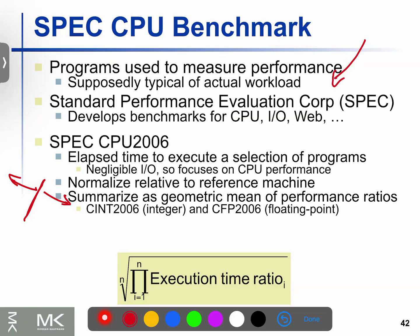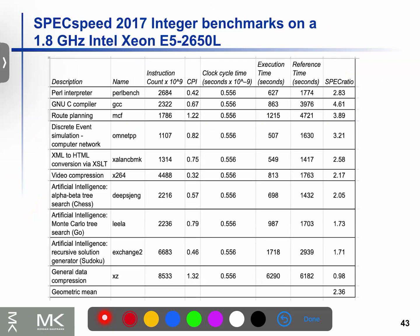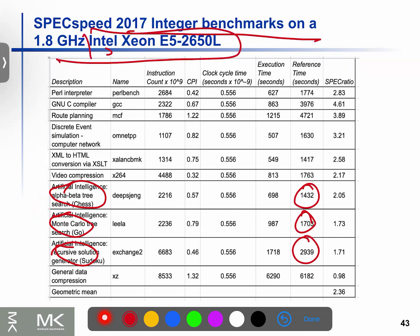The benchmark uses a log-scale to calculate the SPEC ratio. We calculate reference time divided by execution time. For example, with the Intel Xeon chip, one program gives a reference time of 1432 divided by execution time 698, which equals 2.05. This is the SPEC ratio.